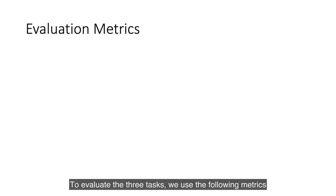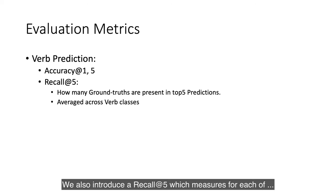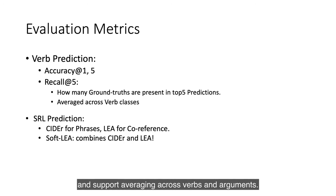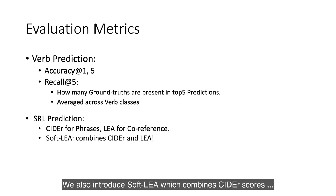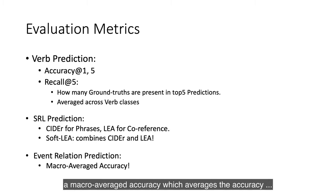To evaluate the three tasks, we use the following metrics. For verb prediction, we use accuracy at 1 and 5, which checks if the top-k predictions are present in the 10 ground truths. We also introduce recall at 5, which measures for each ground truth verb whether it is present in the top 5 predicted verbs, averaged across all verb classes. For semantic role prediction, we utilize CIDEr for phrases with averaging across verbs and arguments. For coreferencing, we utilize LEA, a link-based coreference metric, and also introduce soft LEA, which combines CIDEr scores with the links in LEA to obtain a combined phrase and coreference metric. Finally, for event relation prediction, we utilize macro-average accuracy over the four classes.